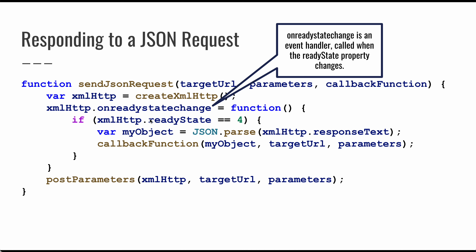When we reach ready state 4, we parse the JSON from the response text, turning it into a JavaScript object, and then call the callback function. In JavaScript, you can pass functions as parameters — so you can define a function like `processMyResponse` and pass it as the third parameter to `sendJSONRequest`, and it will be called with the parsed response object.